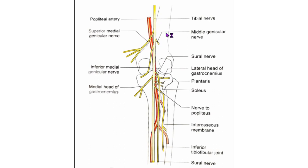The three genicular or articular branches arise in the upper part of the popliteal fossa. First, the superior medial genicular nerve lies above the medial condyle of the femur, deep to the muscles. Second, the middle genicular nerve pierces the posterior part of the capsule of the knee joint to supply the structures in the intercondylar notch of the femur. Third, the inferior medial genicular nerve lies along the upper border of the popliteus muscle.